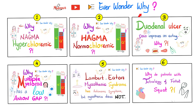A wise person once said the two most important days in one's life are: one, the day we were born, and two, the day we discovered why. This is my Ever Wonder Why playlist. We had previous videos like why is NAGMA hyperchloremic? Why is HAGMA normochloremic? HAGMA is high anion gap metabolic acidosis; NAGMA is normal anion gap metabolic acidosis. Why does the pain of duodenal ulcer improve when you eat, whereas the pain of gastric ulcer gets worse as you eat? Why does multiple myeloma have a low anion gap? Why does Lambert-Eaton myasthenic syndrome have autonomic symptoms, but myasthenia gravis does not? And why do patients with tetralogy of Fallot squat, or get into that knee-chest position?